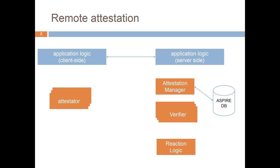It retrieves the necessary information to assemble a request from the ASPIRE database, and it also logs facts about the request. It then sends an attestation request to one of the attestators on the client side. The attestator computes the evidence with the data collected on the monitored app, and sends an attestation response to the server.